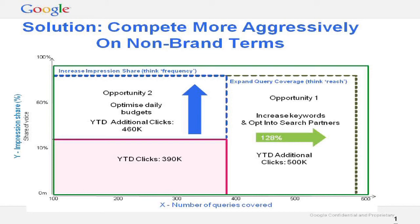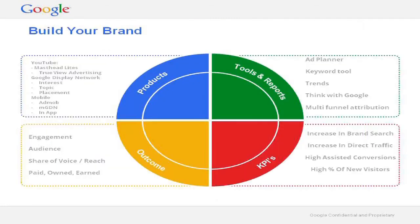What we're going to do now is look at three basic objectives that you might hear from a client: we want to drive branding, we want to increase our ROI, and we want to increase our market share. That's pretty much how we're going to finish the presentation. We'll start off with branding.